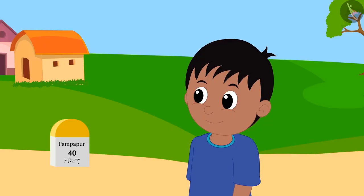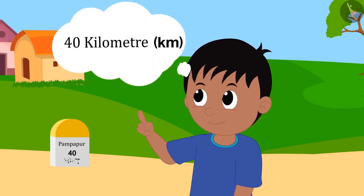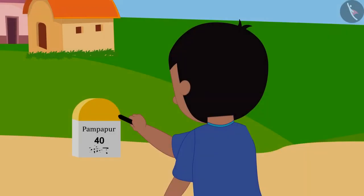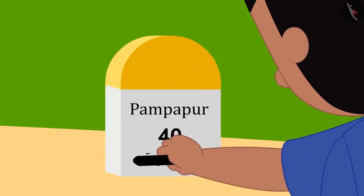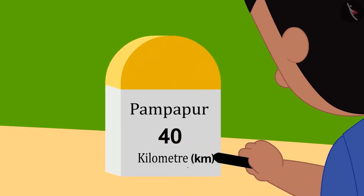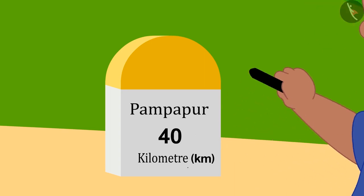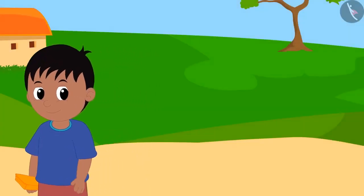Raju found the right answer with your help. Then he took a piece of coal and wrote 40 kilometers in this way and returned to his home.